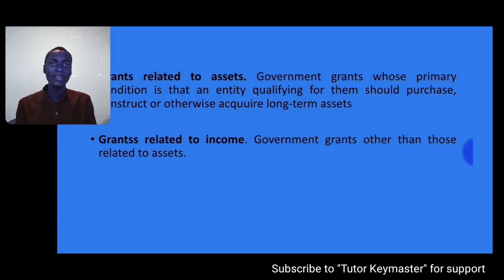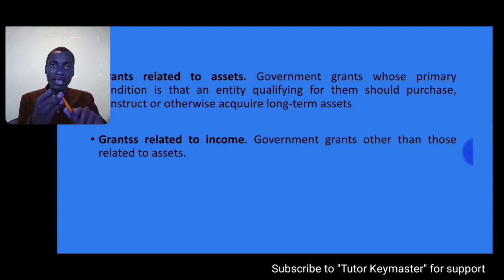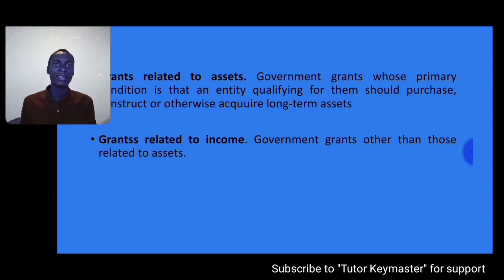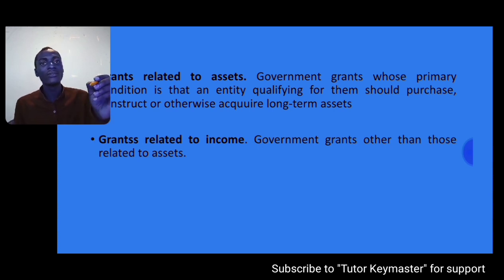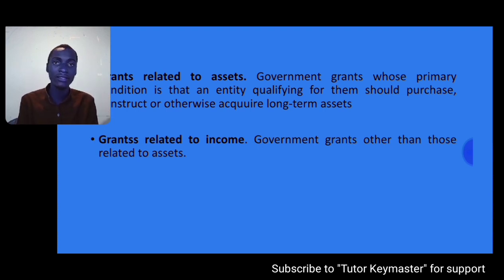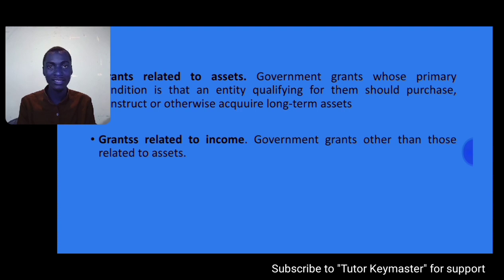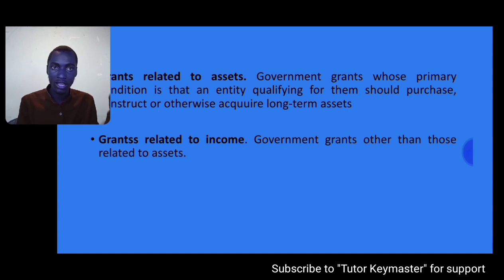When it comes to government grants, we have different forms. We have grants related to assets — these are government grants whose primary condition is that the qualifying entity should either purchase, construct, or otherwise acquire long-term assets. So to qualify for such a grant, the condition is that you should purchase, construct, or acquire long-term assets.